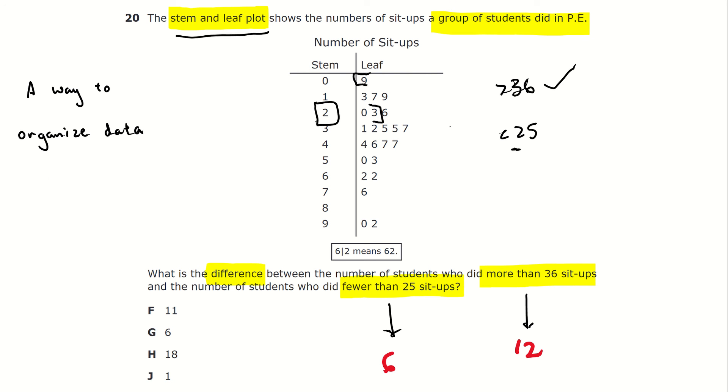Now, we're not done yet, because we still need to find the difference between these two values. The difference is another way of saying subtraction. So, all we need to do is just subtract the value of students, or the number of students who did more than 36, and the number of students who did fewer than 25. We just do simple subtraction, 12 minus 6, which gives us our final answer of 6. As you can see here, that is G.